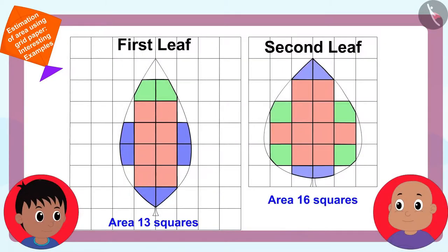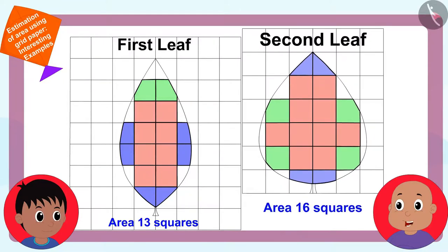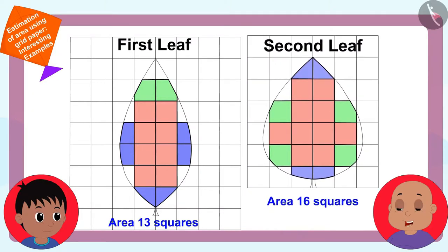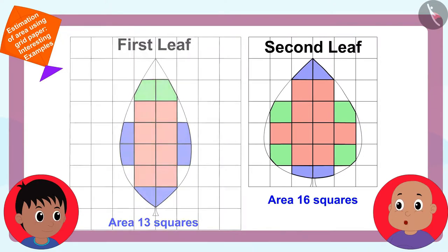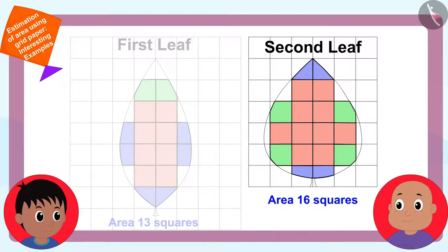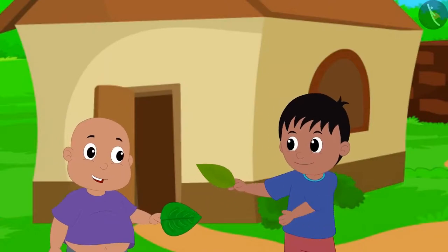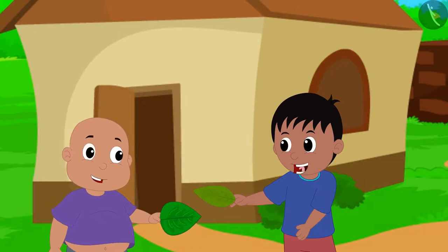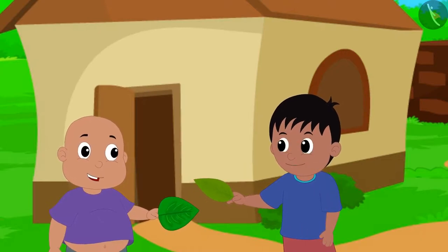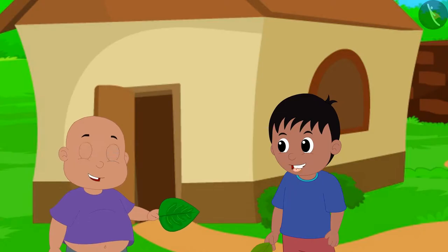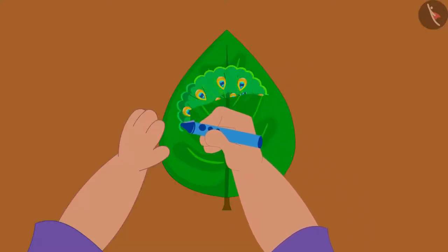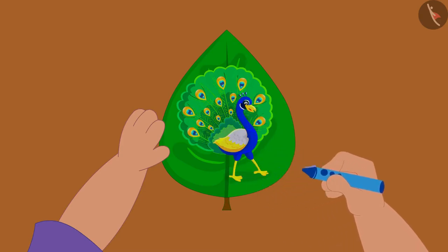Bablu also found the same answer. He told Raju that the second leaf has sixteen squares and the first leaf has thirteen, meaning the second leaf is larger. Raju praised Bablu, noting they now knew which leaf was biggest and had learned to find area using a grid paper. The two friends then made a beautiful painting on the second, bigger leaf.